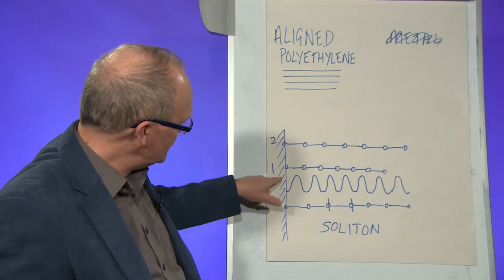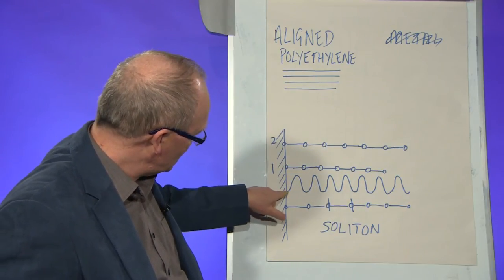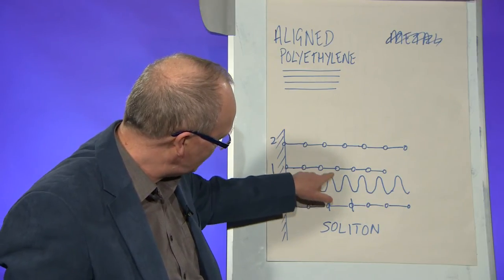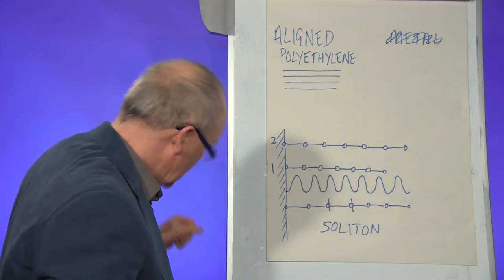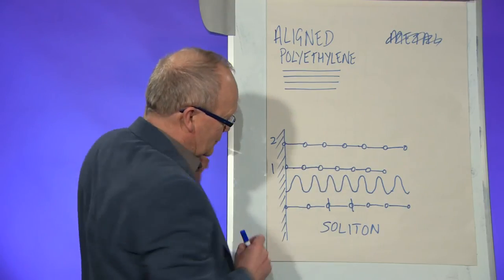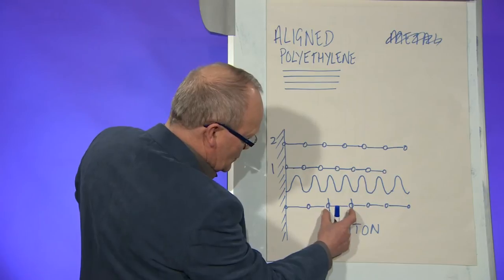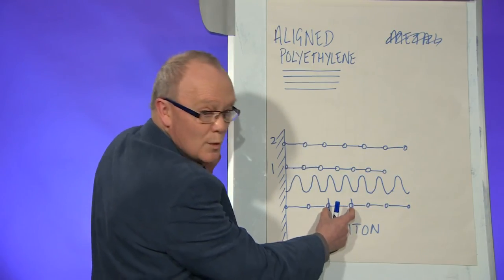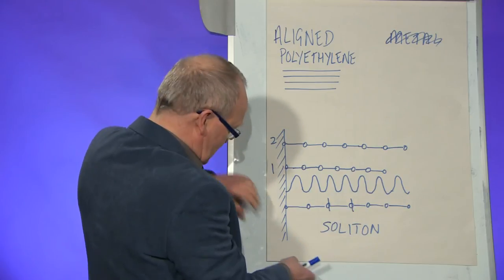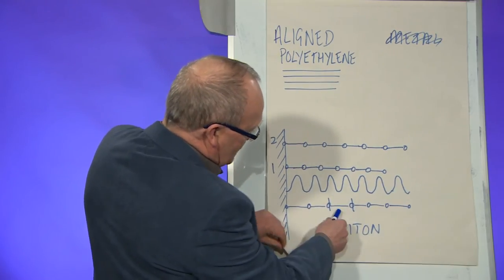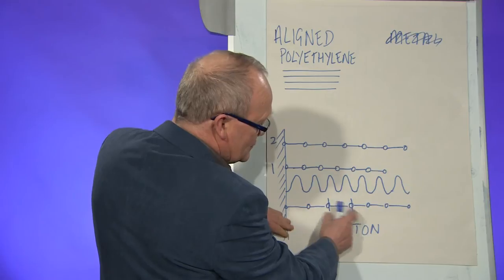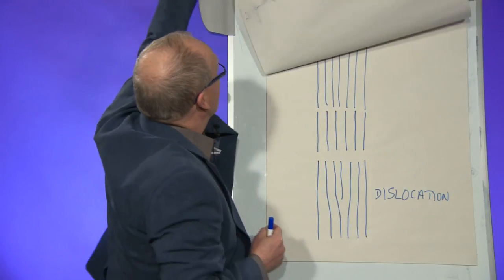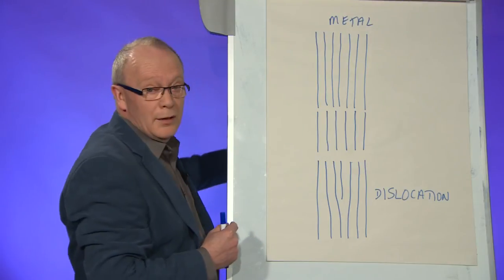But if you do the same thing with a substrate potential so that there is an attractive well for each atom, when you stretch it you can create what's called a soliton where most of the stretch is taken up between one particular pair of atoms. These soliton defects are really important in the deformation of aligned polymer molecules.